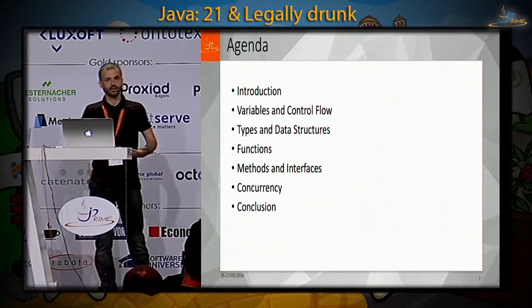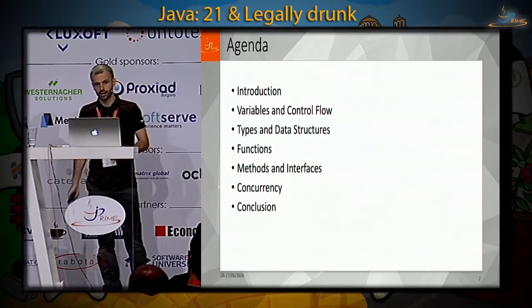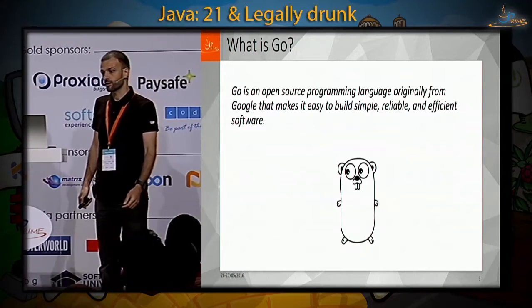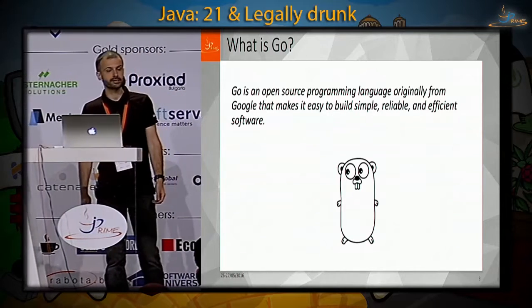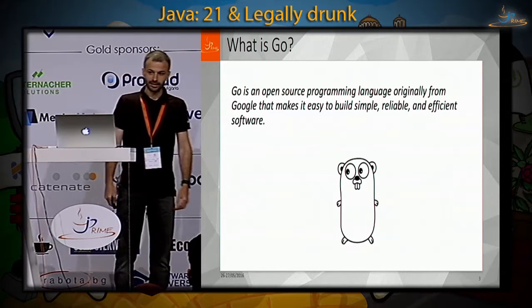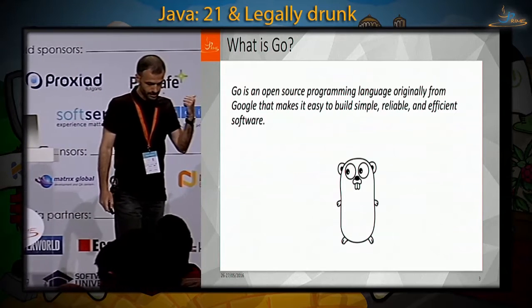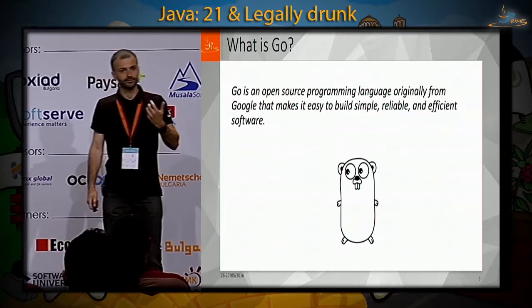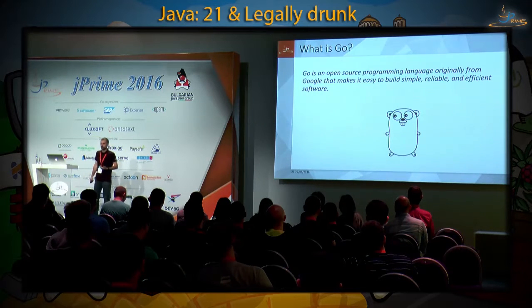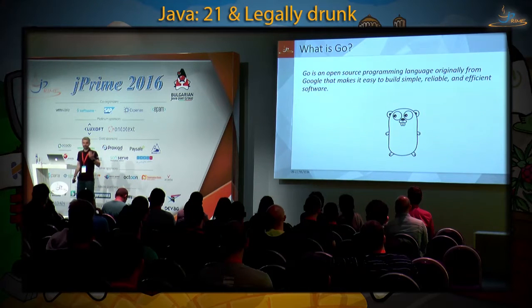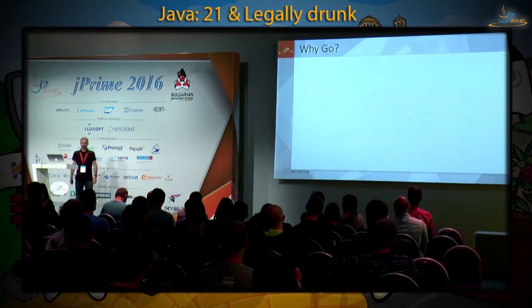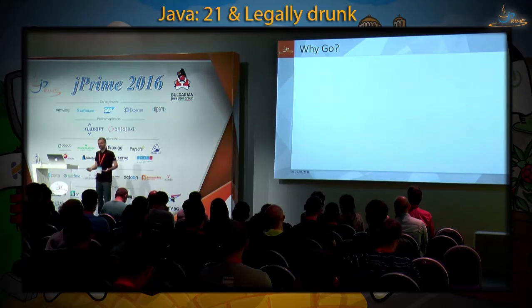So what is Go? By the official definition from the Go website, Go is an open source programming language originally from Google that makes it easy to build simple, reliable, and efficient software. This is Go's mascot — it's a tiny rodent that lives only in North America and its name is gopher.